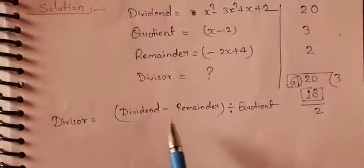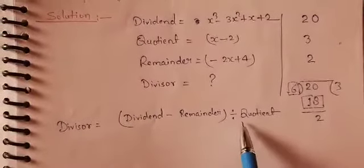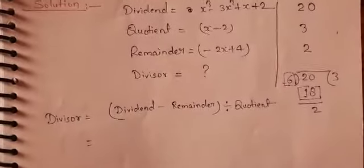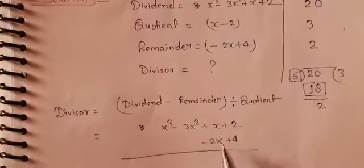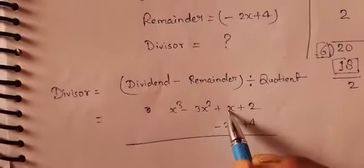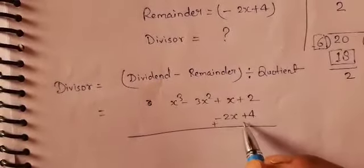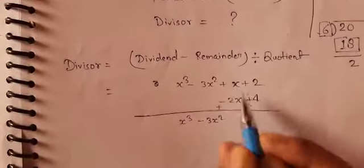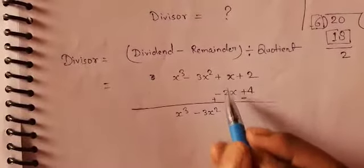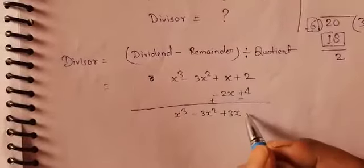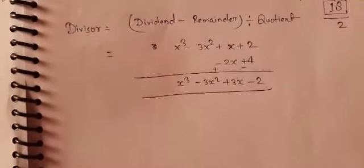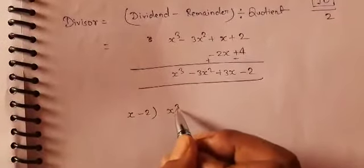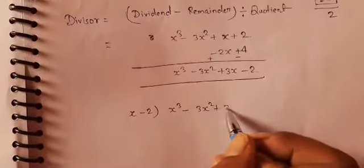So the divisor can be obtained by: (dividend − remainder) ÷ quotient. We subtract the remainder from the dividend, writing like terms together and changing the sign. The coefficient of x changes: 1 + 2 = 3x, and the constant: 2 − 4 = −2. So we get x³ − 3x² + 3x − 2. This has to be divided by the quotient x − 2.